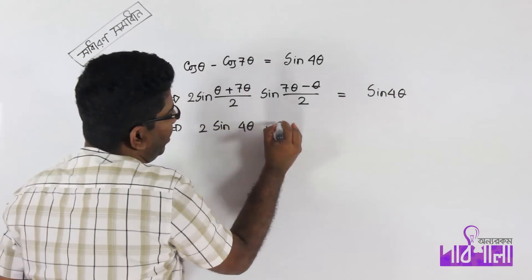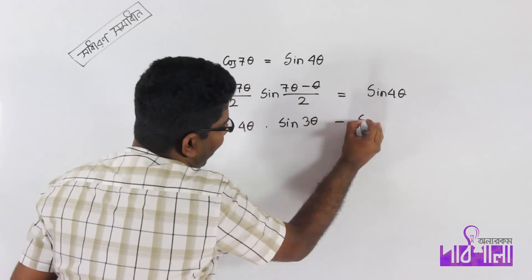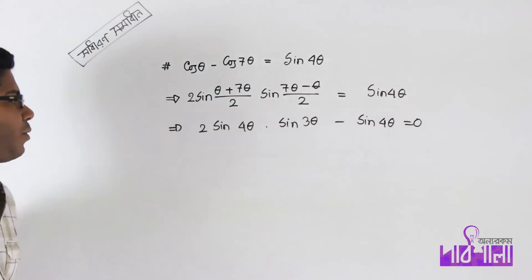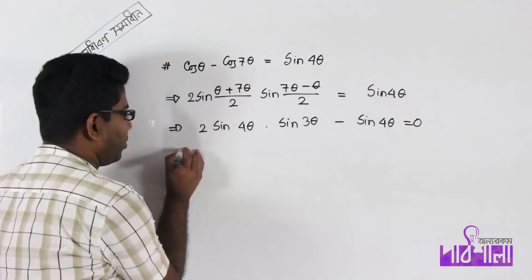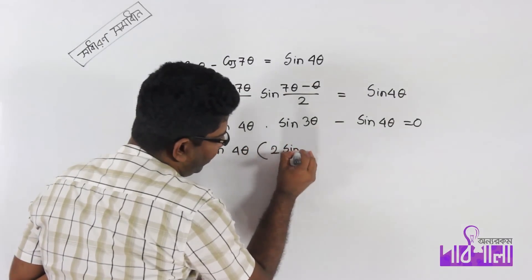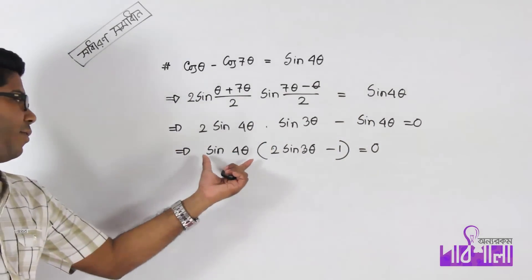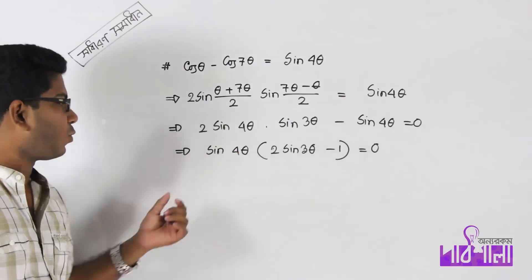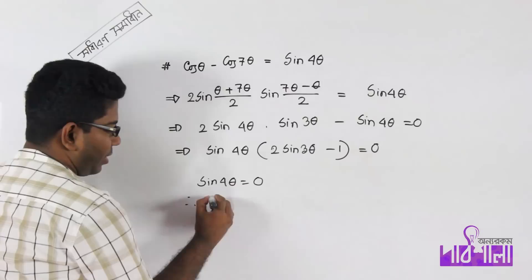We have sin 3θ minus sin 4θ equal to 0. Taking out a common factor — the common factor of sin — we get: sin θ times (2 sin 3θ minus 1) equal to 0. So either sin θ equals 0, giving θ = 0, or the result is zero by the fourth, i.e., θ = π/4.